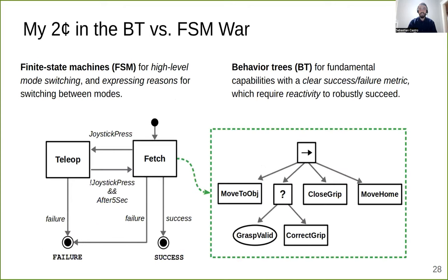I want to have a slide on my opinion of the behavior tree versus finite state machine philosophical difference. I'm not exclusively one or the other. Finite state machines are very good at high-level mode switching and particularly for expressing why you want to go from one mode to another. For example, the state machine has an autonomous fetching mode where if a user presses a joystick it goes into a teleoperation mode. Some of these modes can under the hood be implemented with behavior trees — things that have a very clear success or failure metric and that require a lot of recovery or reactivity is where behavior trees shine. In my experience, it's typically been a high-level state machine with a repertoire of behaviors underneath that has made things work.